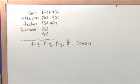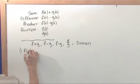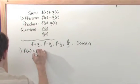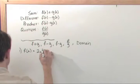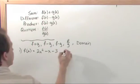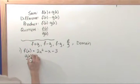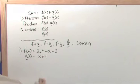And so for the first problem, f(x) is equal to 2x squared minus x minus 3. And g(x) is x plus 1. So I need to find all of these things. So how do I do that?